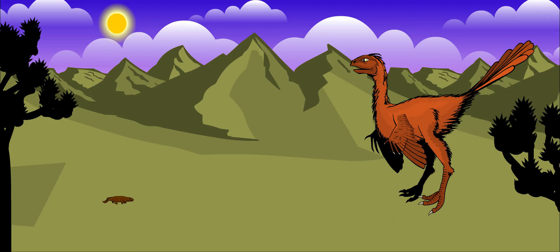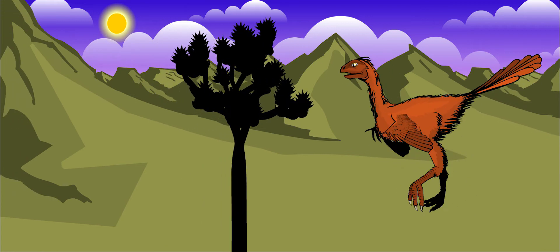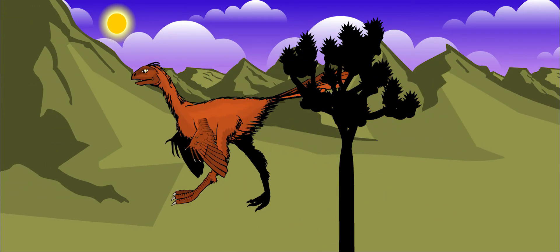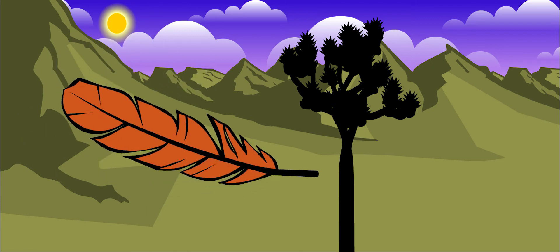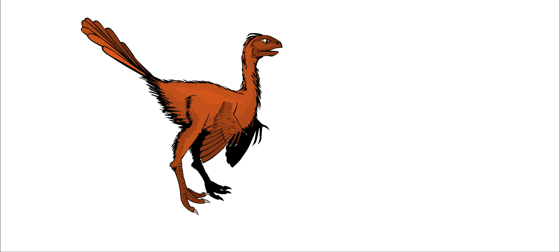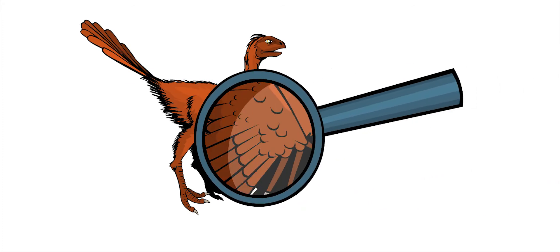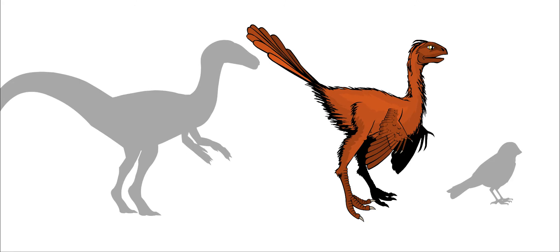Its front legs were small and useful for grabbing food. It had long, sharp claws on its fingers. But this creature had something else that no other dinosaur had before: feathers. It had a feathered body, a beak, and a feathered tail. Its front legs were more like wings than legs. It was somewhere between a dinosaur and a bird.